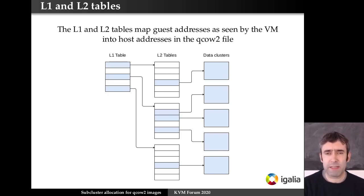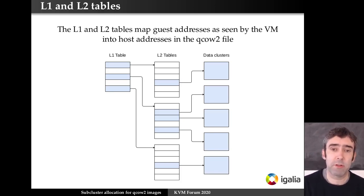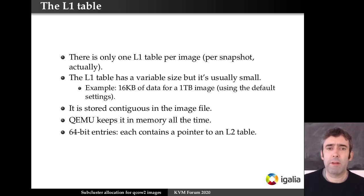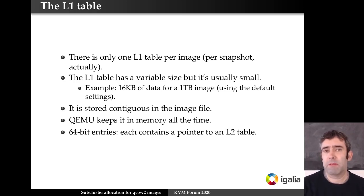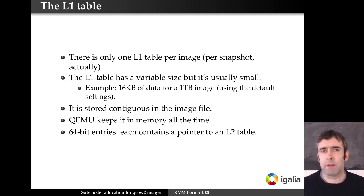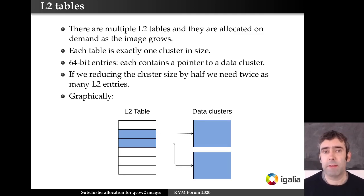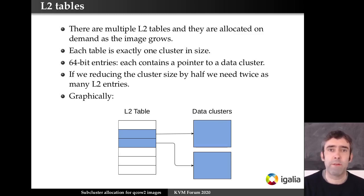The mapping from guest offsets to host offsets is done using a structure we call L1 and L2 tables. This is a simple structure that maps virtual offsets into host offsets. The L1 table is just one per image — per snapshot actually, since QCow2 can have several snapshots. The table itself is very small — for a 1TB image it's just 16K — and QEMU always keeps it in memory. It just contains pointers to the L2 tables. The L2 tables can be many; initially there are none, but they are allocated on demand as the image grows. The L2 tables are always one cluster in size, and they contain pointers to the data clusters plus some additional information.